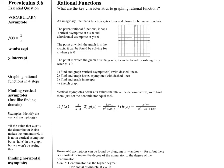Asymptotes are usually drawn with dashed lines — they're not actually part of the graph, just a guide. We have a horizontal asymptote and a vertical asymptote. The actual graph gets closer and closer to those asymptotes (shown in red) but the graph itself never actually touches them.